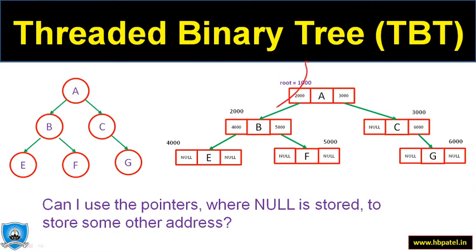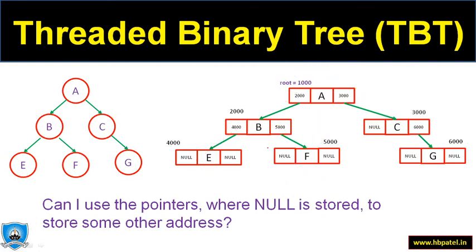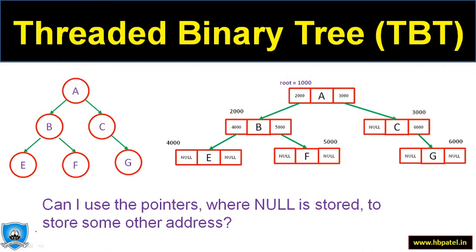In a binary tree you can only go downward from parent to child — there is no way to go back up from a leaf node to the root, because we don't store addresses in that direction. But if we store, say, address 1000 in a leaf's null pointer, that leaf can now point back to the root. This is the motivation: rather than null, we store some meaningful address.